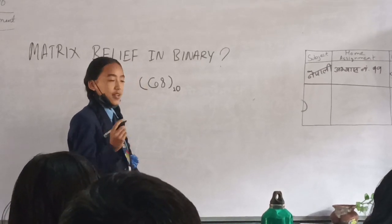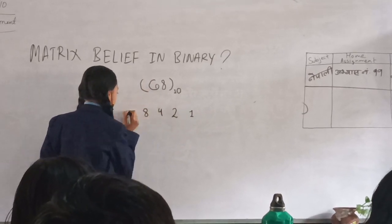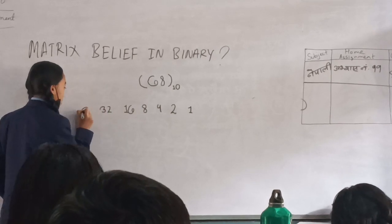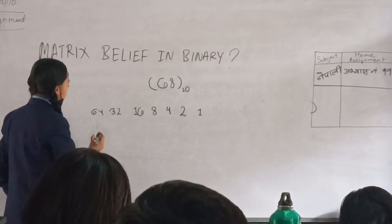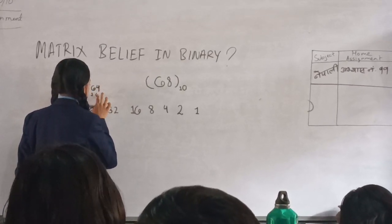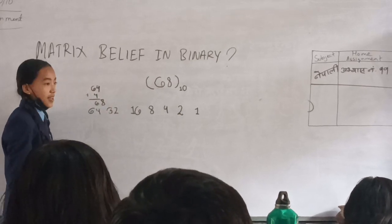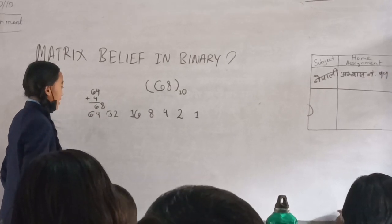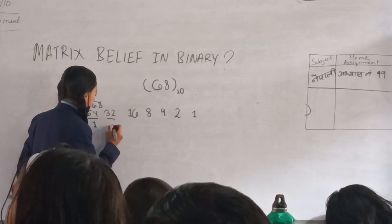We are going to add 1 and double it to the next number. We are going to add up to 64 because we cannot go more than the number. So we have found out the answer, it is 68, because we have added 64 plus 4. We are going to choose the numbers which we have added as 1, and which we haven't added we should add 0.